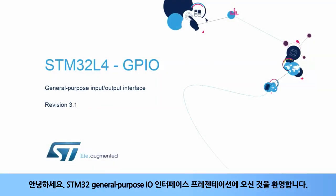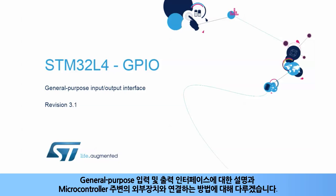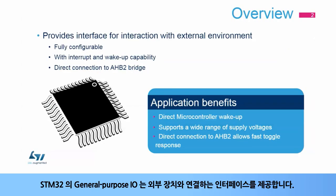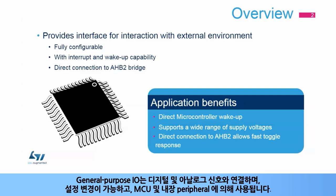Welcome to this presentation of the STM32 General Purpose I/O interface. It covers the general purpose input and output interface and how it allows connectivity to the environment around the microcontroller. General purpose I/O pins of STM32 products provide an interface with the external environment. This configurable interface is used by the MCU and also all other embedded peripherals to interface with both digital and analog signals.